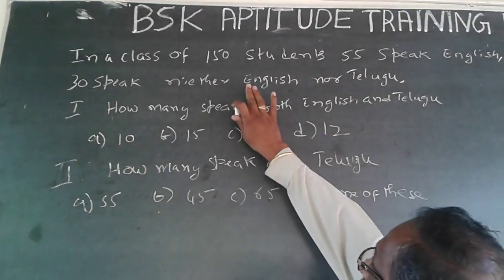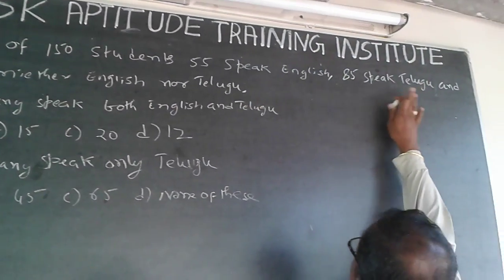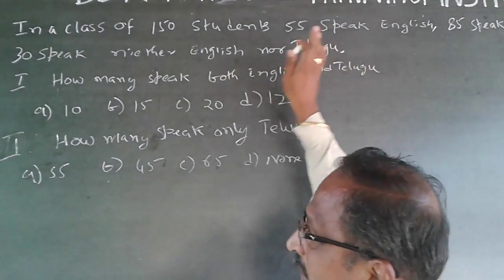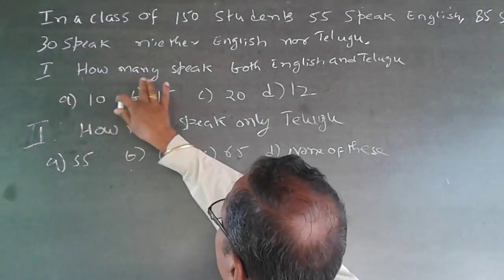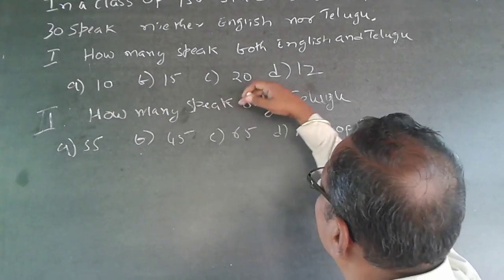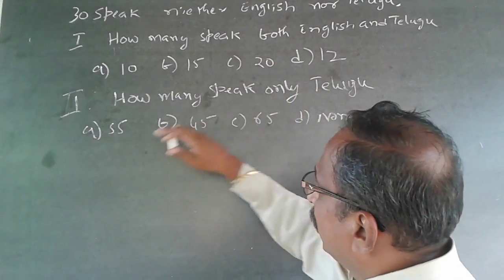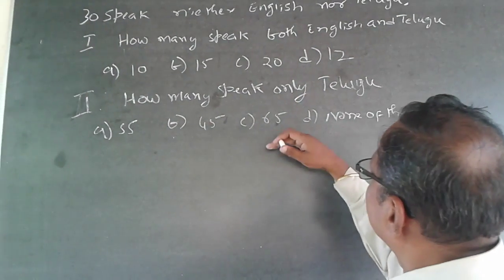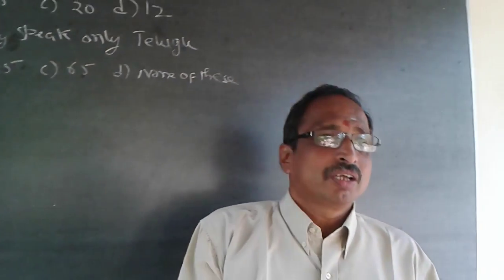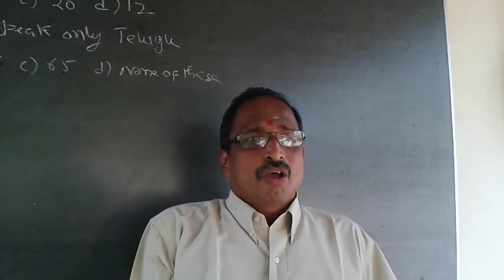The question is: in a class of 150 students, 55 speak English, 85 speak Telugu, and 30 speak neither English nor Telugu. There are two questions. First, how many speak both English and Telugu? Options: 10, 15, 20, 12. Second, how many speak only Telugu? Options: 55, 45, 65, or none of these. These are Venn diagram or set theory problems.